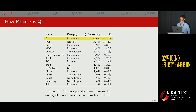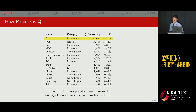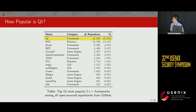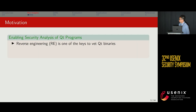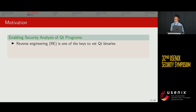How popular is Qt? We conducted an empirical study by counting all open source C++ repositories from GitHub. In this table, we show the top 15 most popular C++ frameworks, and Qt is one of the most popular ones. Since there are so many Qt applications, it becomes very important to enable security analysis of these programs by applying reverse engineering.